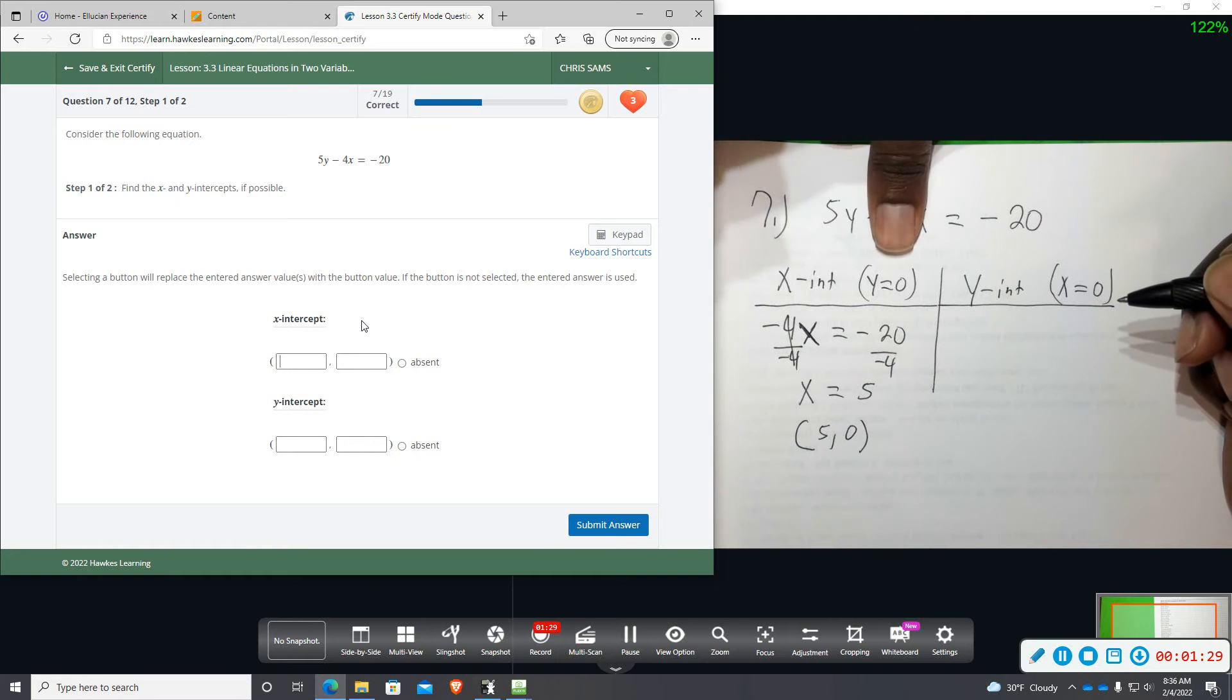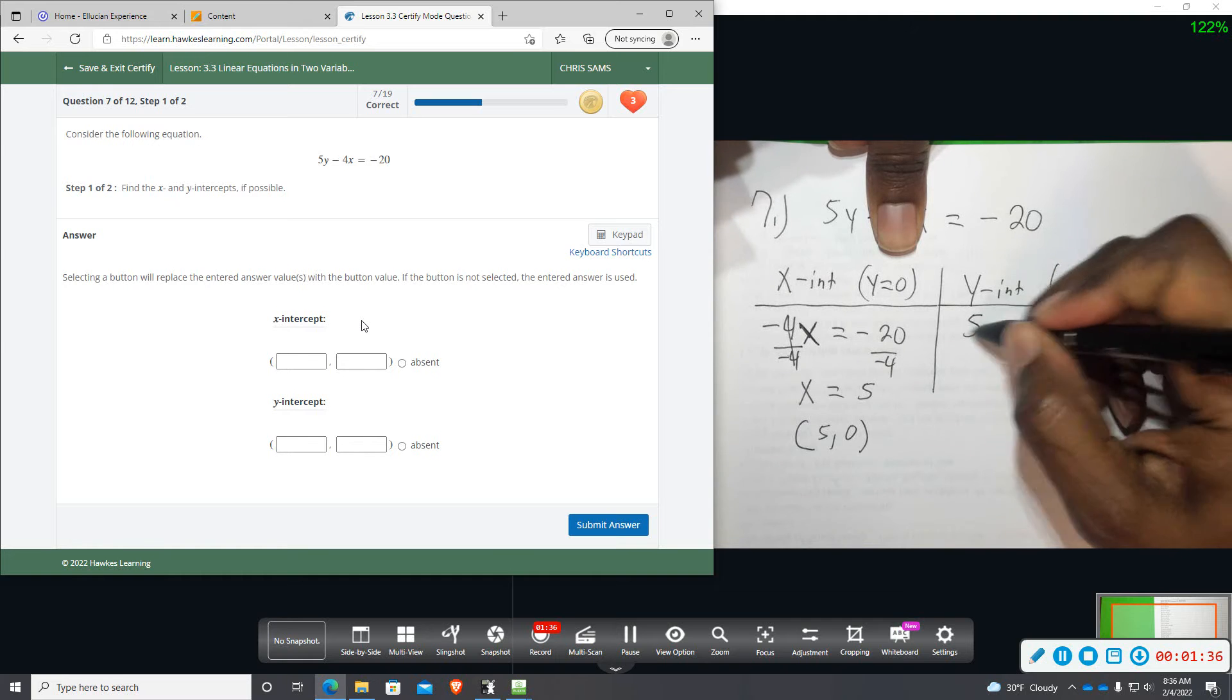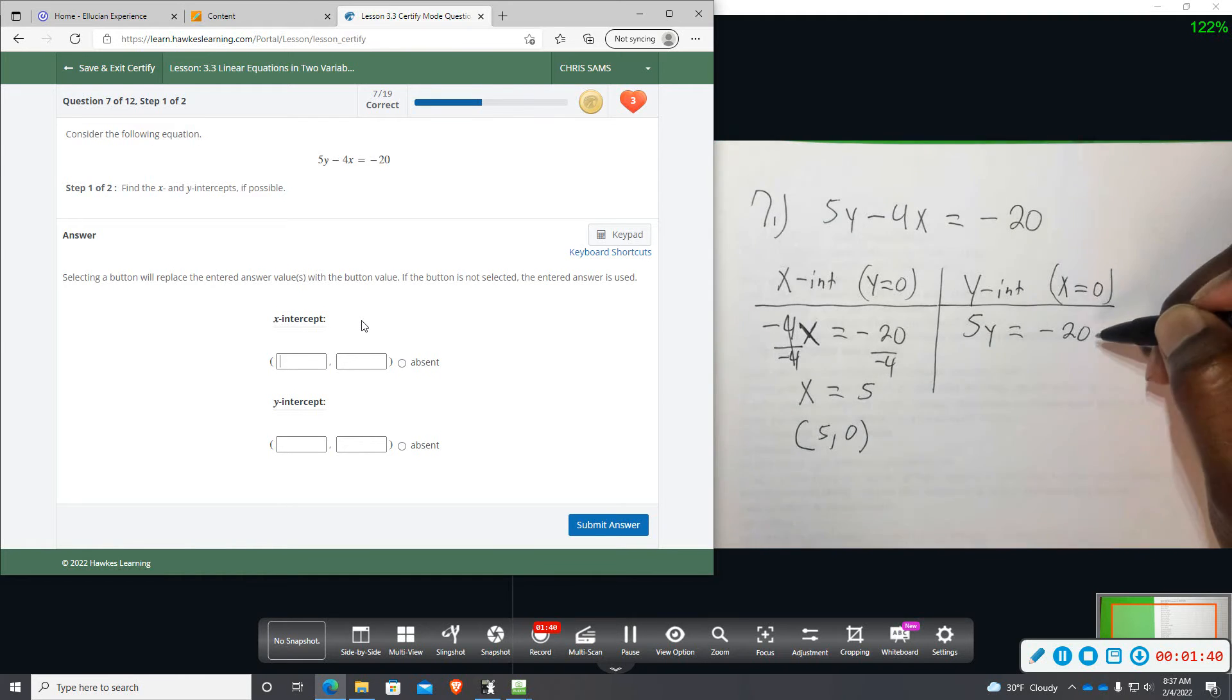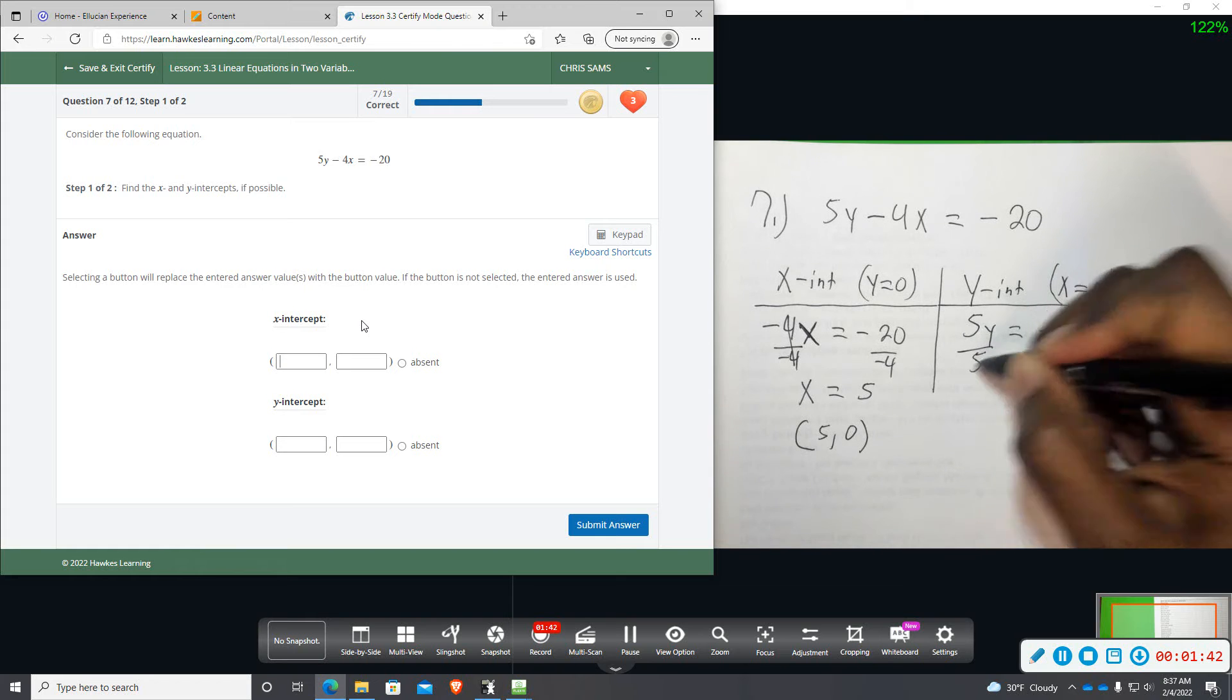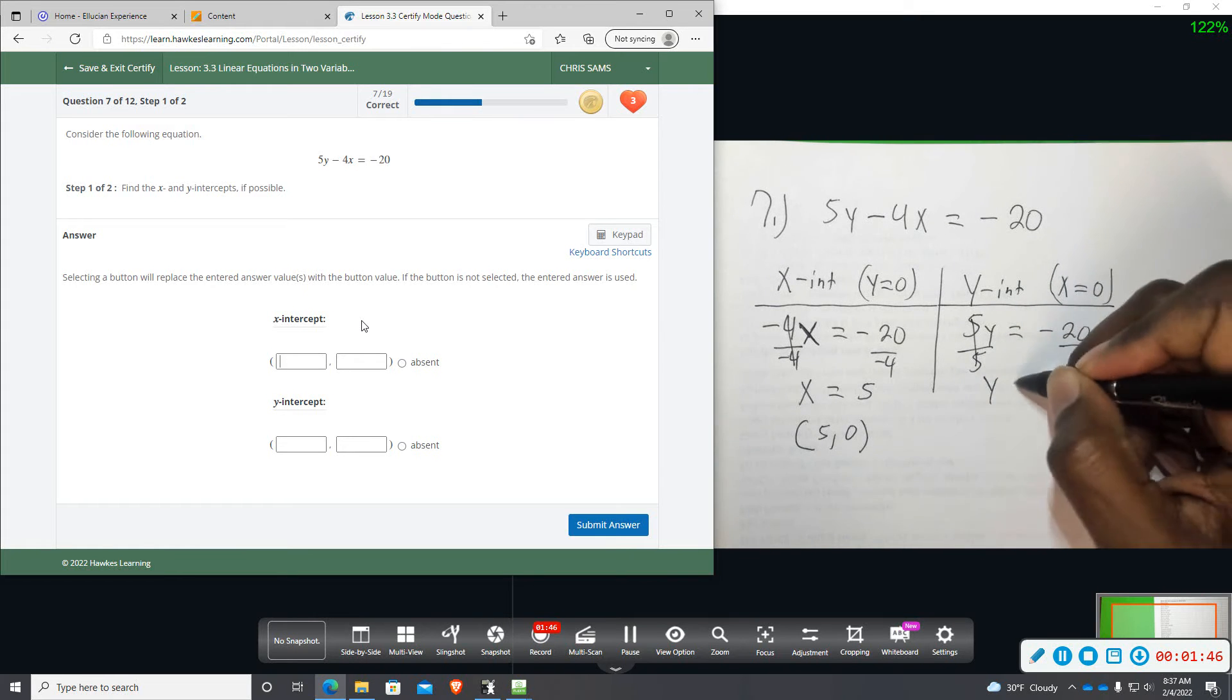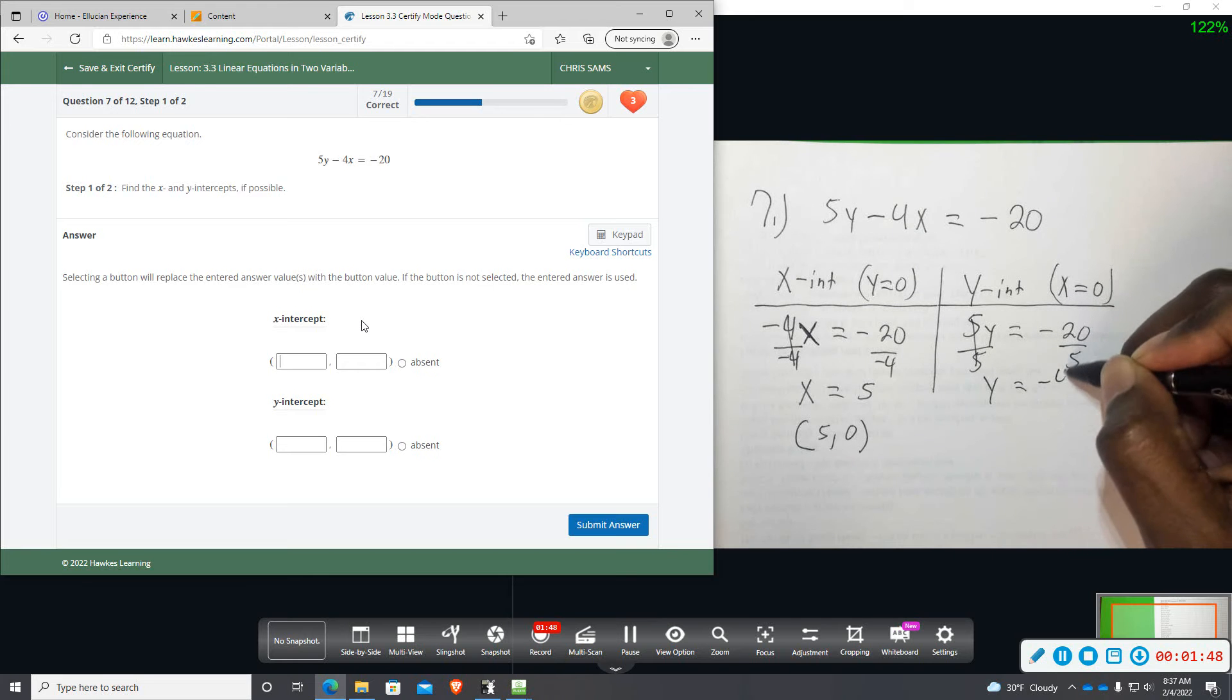Then on the other side, we're going to get rid of the x term by plugging in the 0, and we'll be left with 5y equals negative 20. And then we're going to divide by 5, and then that gives you y equals negative 4. So as the ordered pair, x is 0, y is negative 4.